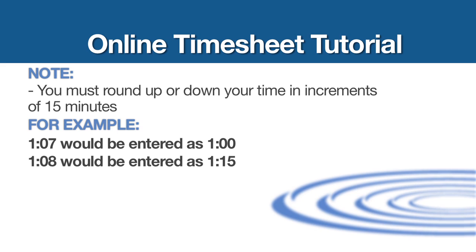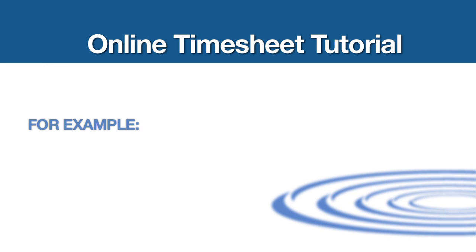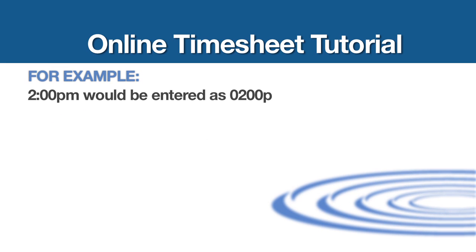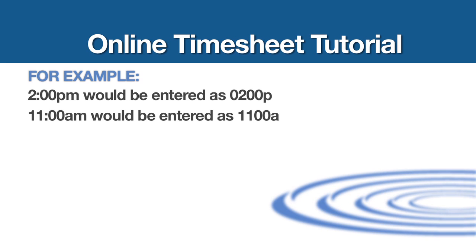Please make sure that you use the correct AM/PM modifier after your time. For example, 2 o'clock PM would be entered as 0200P. 11 o'clock AM would be entered as 1100A. The default is AM, so if you don't choose an A or a P, AM will be automatically entered.